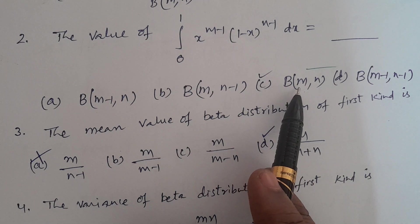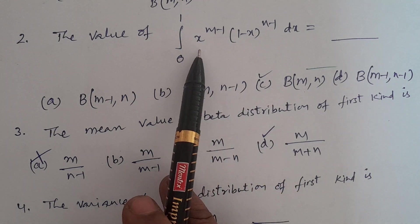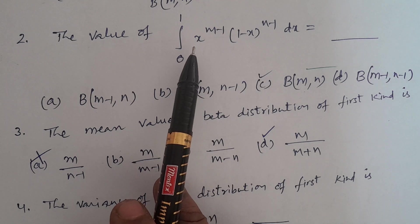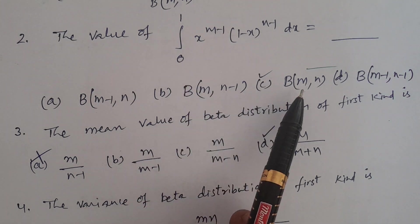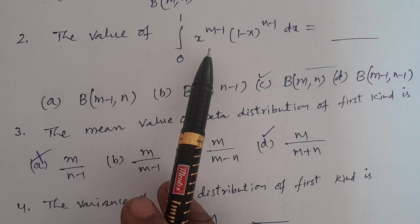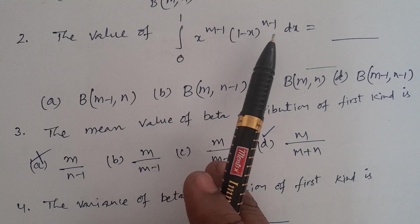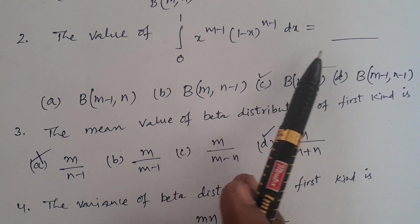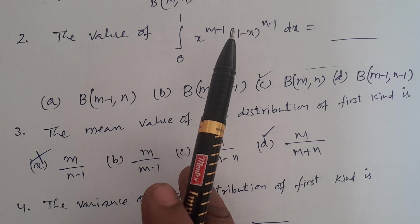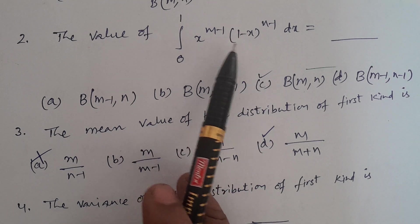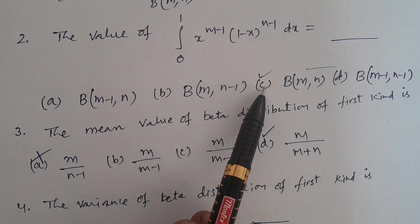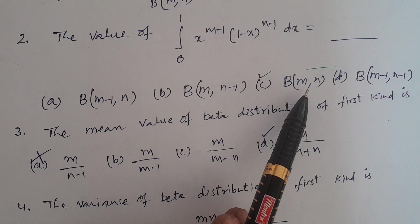The correct answer is β(m, n). This is the integrand of beta distribution of first kind, so the answer is β(m, n). In Telugu — the value of integral from 0 to 1 of x^(m-1) · (1-x)^(n-1) dx. This is the beta distribution of first kind integral, and the correct answer, Option C, is β(m, n).